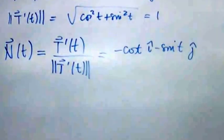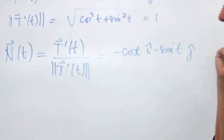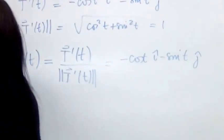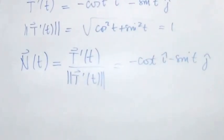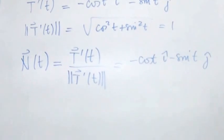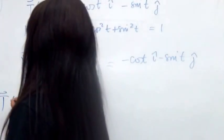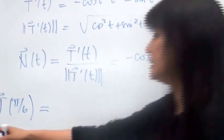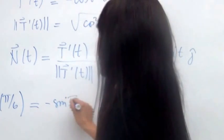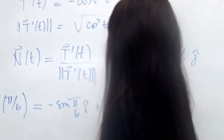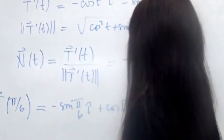Let's draw a picture of what's happening to T and N. The instruction is to compute these at t equals pi over 6. T of pi over 6 is negative sine(pi/6) i plus cosine(pi/6) j. That's negative 1/2 i plus (√3/2) j.